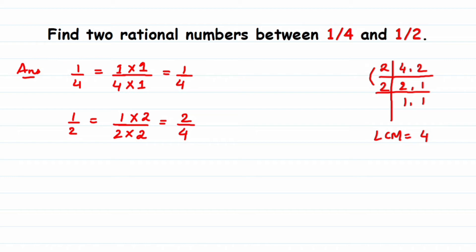We can multiply by any number — the more we multiply, the more rational numbers we can find. If we multiply by 3 we get 2 rational numbers; if we multiply by 5 we get 4 rational numbers. The rule is: take however many are asked plus 1. So multiplying 1/4 by 3/3 gives us 3/12.